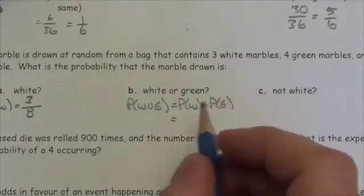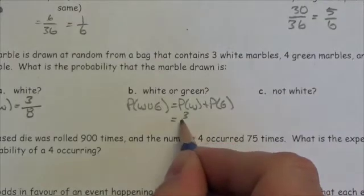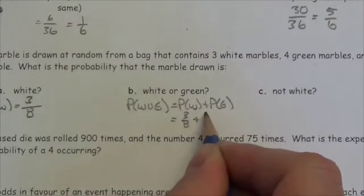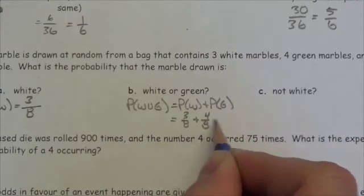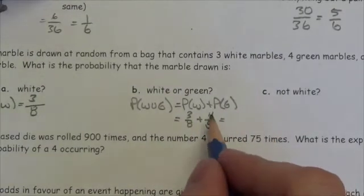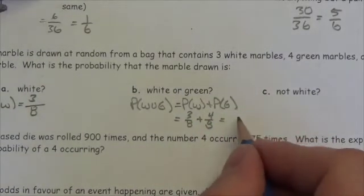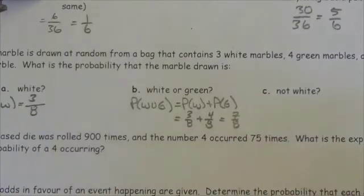We're only grabbing the one marble here. So there are three white, there are four green. So the probability of getting a white is three out of eight. The probability of getting a green is four out of eight. Altogether, that's seven out of eight.